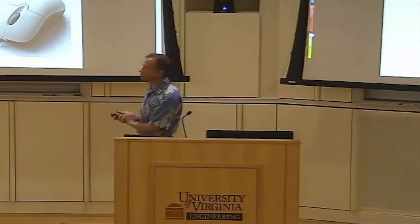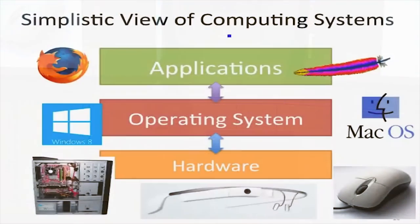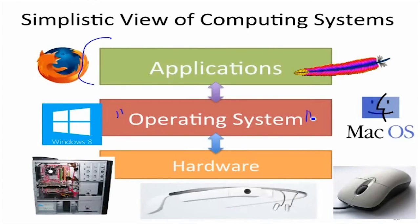Here's a way to view computer systems — a simplistic view, but probably the view most people have. At the high level you have applications: the programs that users understand, can run, and think they're using. Below that you have an operating system, which is programs that those applications are using. And below that you have physical hardware. The operating system is the link between application programs and the physical stuff. But what things are broken about this picture in a modern computing system? How clear are these layers?